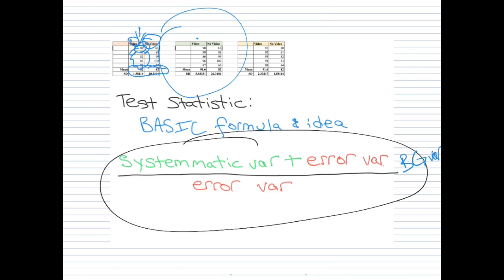Let's look at another example. Here, let's look at the green example. We're comparing again the video group versus the no video group, and here we do see some between group variation. We see that the video group scored almost a full 10 points higher than the no video group. We have 91.6 and 82 as the means there. So we've got a pretty high between group variation.